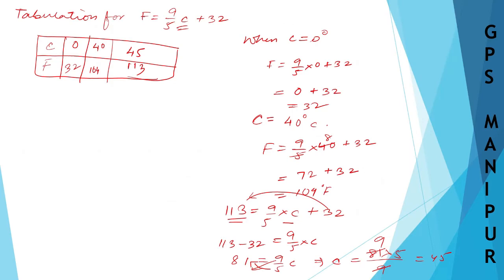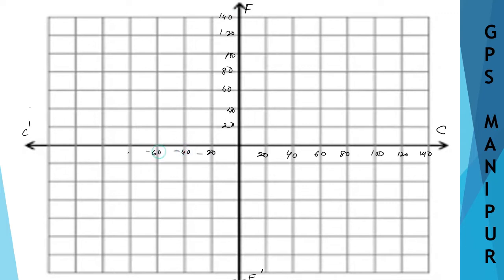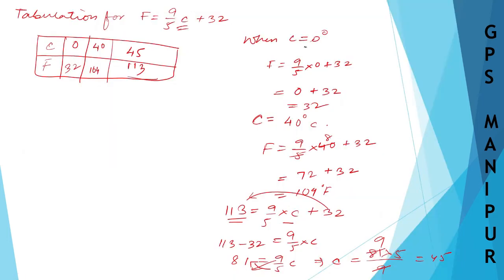Since I have values up to 113°F, I need the scale to go that high. Taking 20 units per division: markings are 20, 40, 60, 80, 100, 120, 140 on the positive side, and −20, −40, −60, −80, −100, −120, −140 on the negative side, for both axes. One scale equals 20 units.